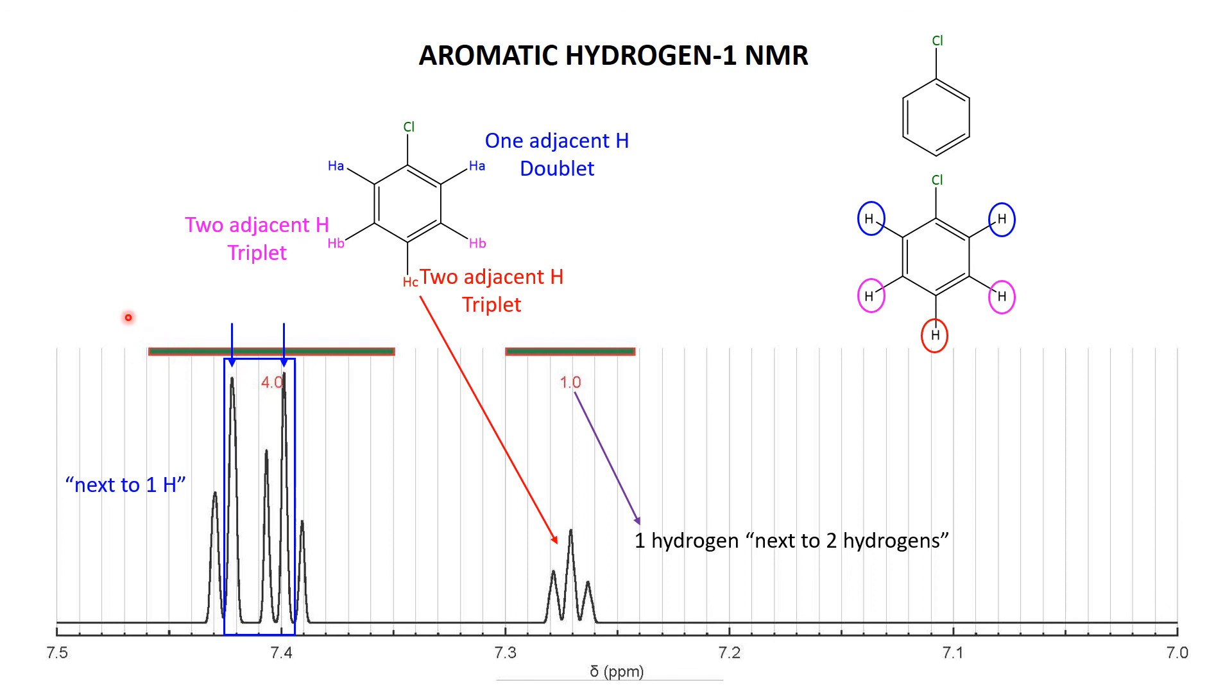Now what's left when we pull out that doublet is three peaks that are almost in a ratio one to two to one. Remember these things are not always exact. Although if you look at and match up this triplet with this triplet, you can see that it's the left hand one that's a little bit higher in both. So I'm going to say that those three peaks there match up quite nicely to the triplet expected for Hb. So those three peaks there correspond to two hydrogens that are next to two hydrogens.